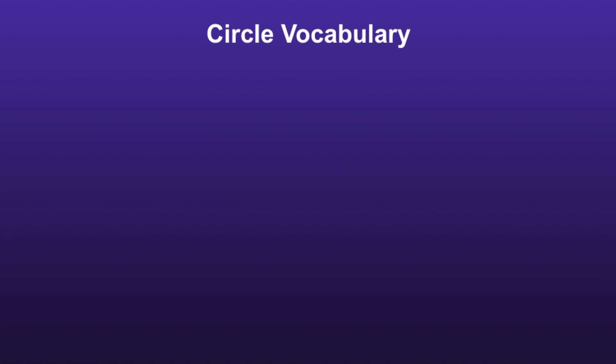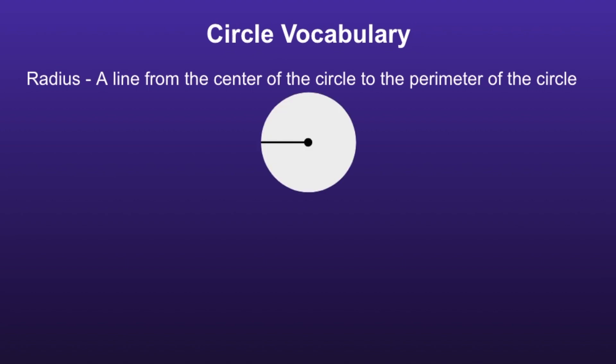Circle Vocabulary. Radius. A radius is a line from the center of the circle to the perimeter of the circle. I like to think of it as halfway across the circle.